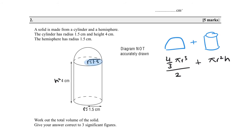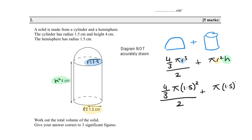The radius of the hemisphere is 1.5, the height of the cylinder is 4, and the radius is 1.5. We have all the information needed. Substituting in, we get 3/2 π + 9π, which is 21/2 π. To 3 significant figures this gives approximately 32.986.